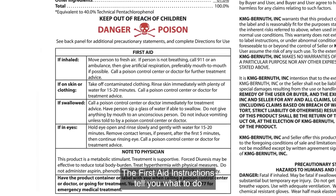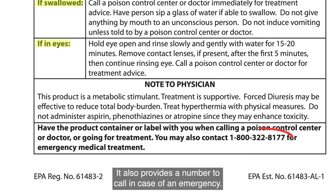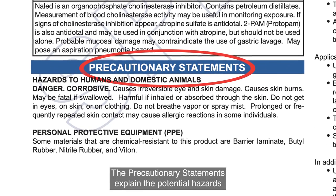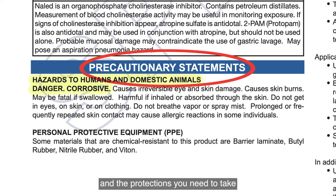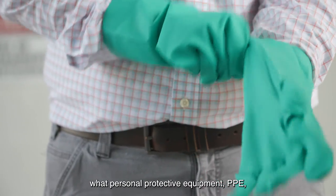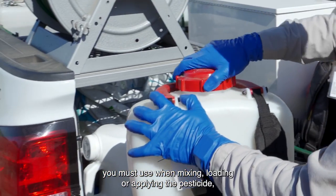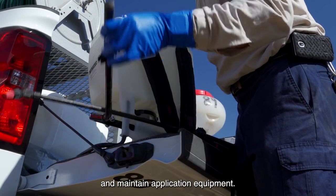The first aid instructions tell you what to do if you get the pesticide in your eyes, inhale it into your lungs, swallow it, or get it on your skin. It also provides a number to call in case of an emergency. The precautionary statements explain the potential hazards to humans and domestic animals, health risks, and the protections you need to take while using the product. It will also tell you what personal protective equipment you must use when mixing, loading, or applying the pesticide, or when you clean, repair, and maintain application equipment.